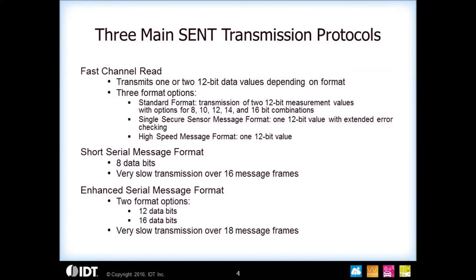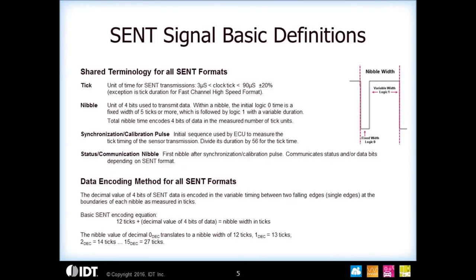On the slow channel messages there are also three formats. The short serial message is when you transmit eight bits of data, and then two enhanced serial formats where you can either transmit 12 or 16 bits of data. The fundamental unit of time measurement for SENT is the tick time. The minimum period is three microseconds, but it can be up to 90 microseconds.